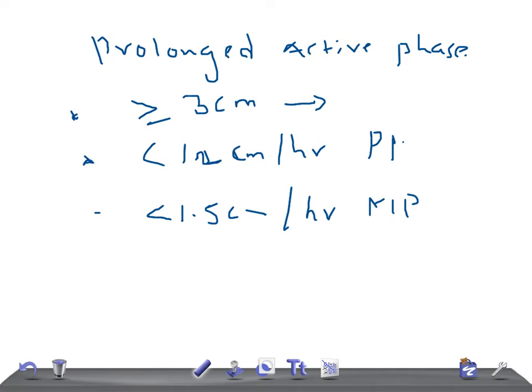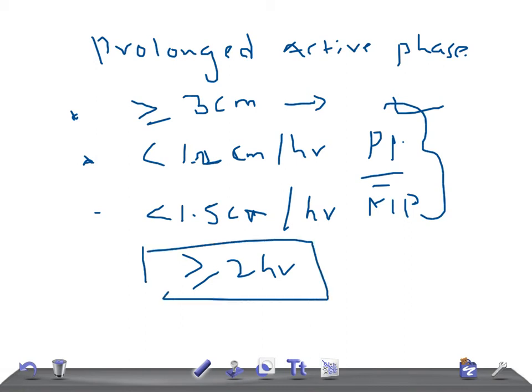Arrest is diagnosed if cervical dilation has not changed for more than two hours. Remember three criteria: first, cervical dilation must be more than three centimeters — if less than three centimeters, it has not reached active phase yet and is called prolonged latent phase; second, rate of cervical dilation less than 1.2 centimeters per hour in primipara or less than 1.5 centimeters per hour in multipara; third, if the total duration of active phase arrest is more than two hours, it is known as prolonged active phase.